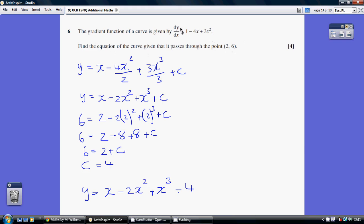So, how do we get from dy dx to the actual equation to y? We have to integrate. So, integrating this, we get x minus 4x squared all over 2 plus 3x cubed over 3 plus an unknown constant.